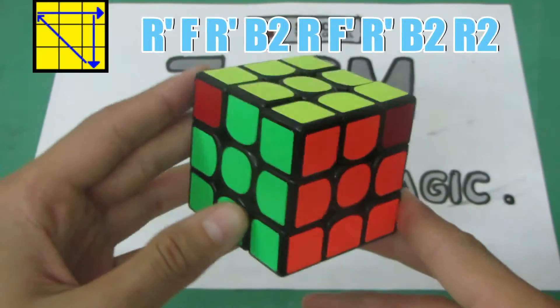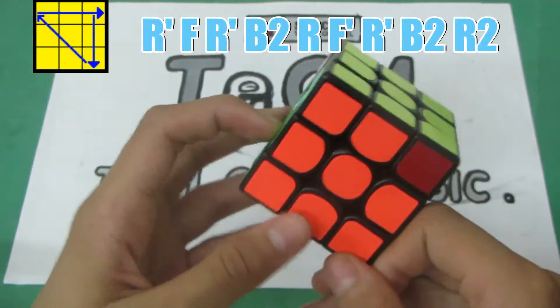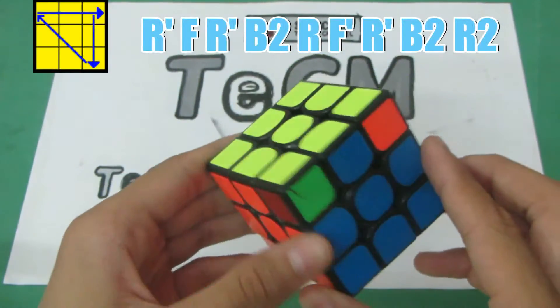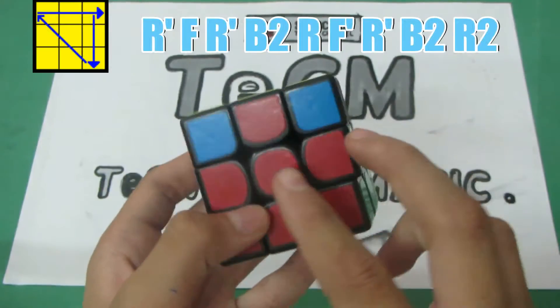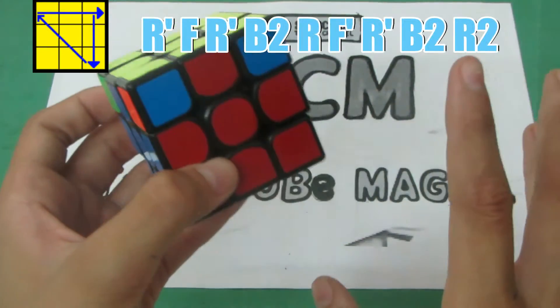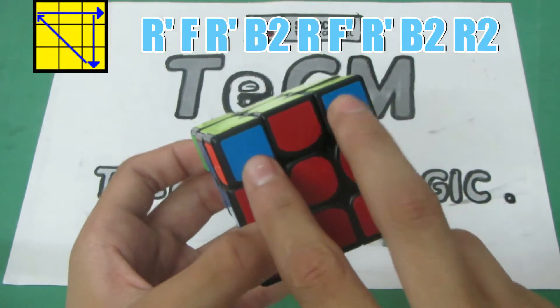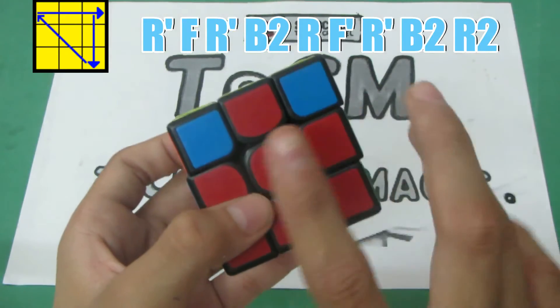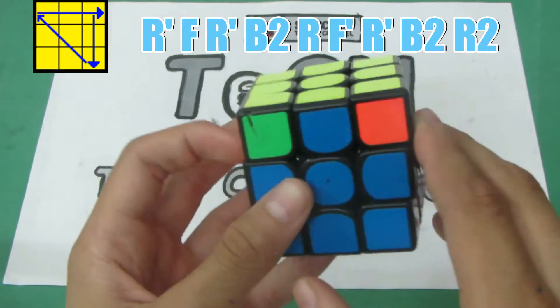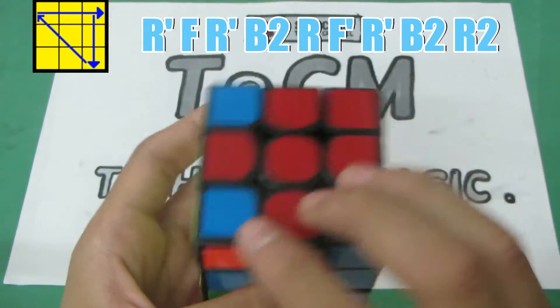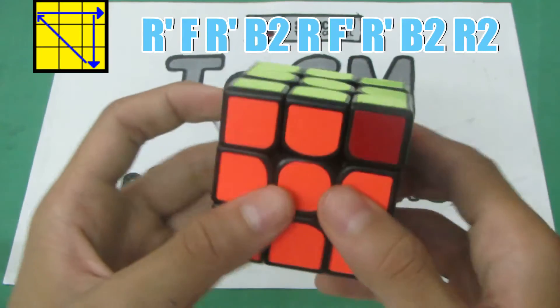The first algorithm is this one in which you need to swap the corners and you have a pair of headlights. Now what is headlights? When you have two stickers of same colors, this pair is called headlights. So you want to keep the headlights at the back and do the algorithm. That is R' F R' B2 R F' R' B2 R2.